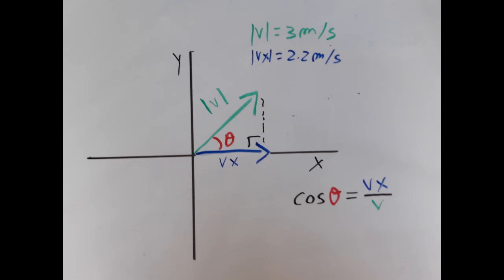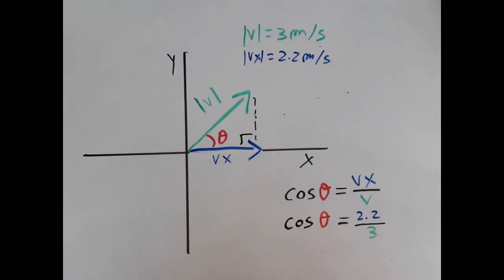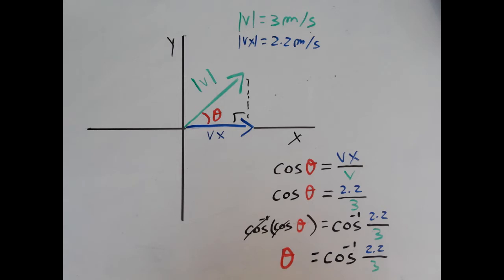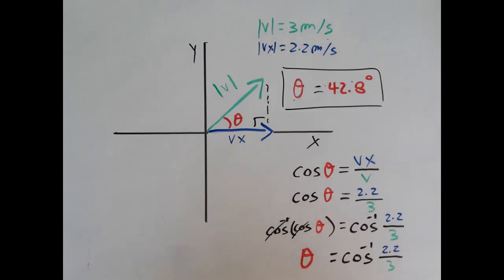So we're going to use the function cosine. Cosine of theta is bx over b. So cosine of theta equals 2.2 over 3. Then we apply arccos to both sides and we get that theta equals arccos of 2.2 over 3. When we plug this in the calculator we get that theta is 42.8 degrees over the x axis.